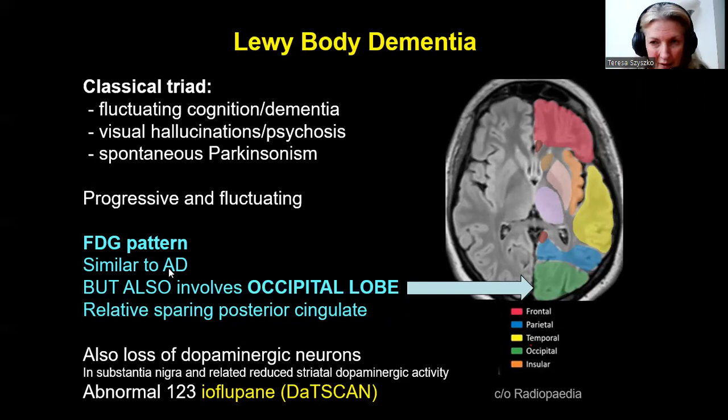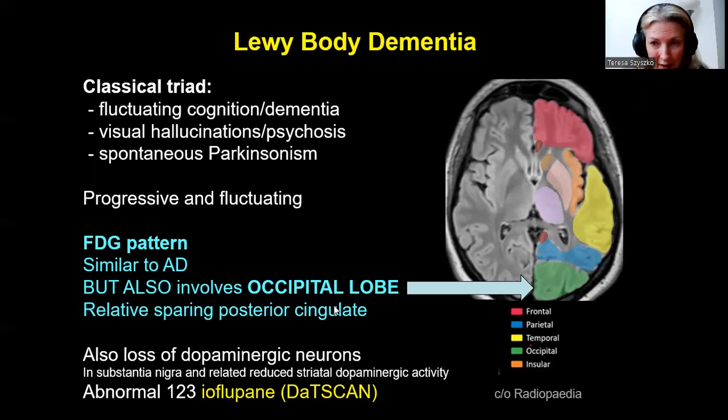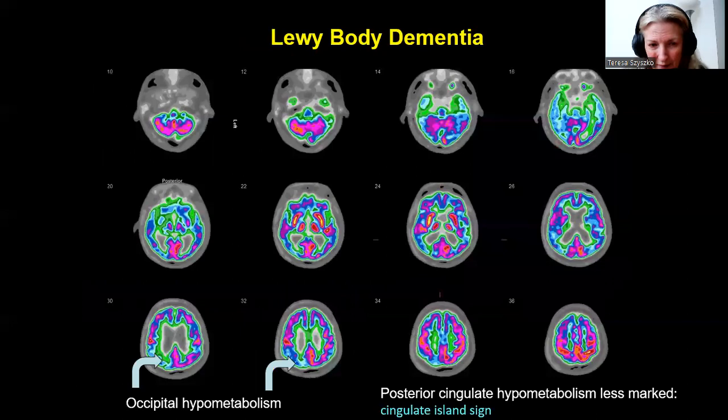The FDG pattern in Lewy body dementia is actually very similar to Alzheimer's disease. However, it also involves the occipital lobe posteriorly — so frontal, temporal, parietal and occipital lobes are seen posteriorly. Interestingly, there's also relative sparing of the posterior cingulate gyri. You also have loss of dopaminergic neurons, so if Lewy body dementia is suspected, a DAT scan is very useful.